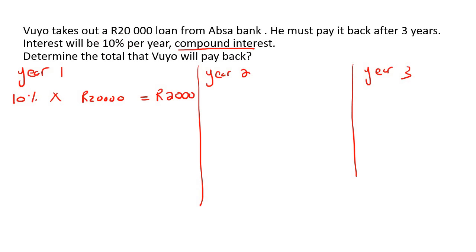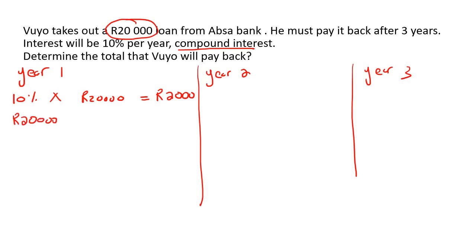So that means that the total that Vujo is going to owe the bank is going to be 20,000 rand, which he owes them, plus 2,000 rand. So he'll owe them 20,000 plus they've now added a 2,000 rand interest — it's almost like a penalty — so it's 22,000 rand.